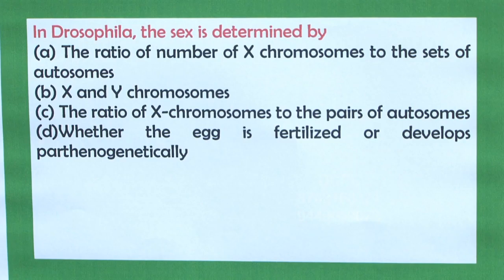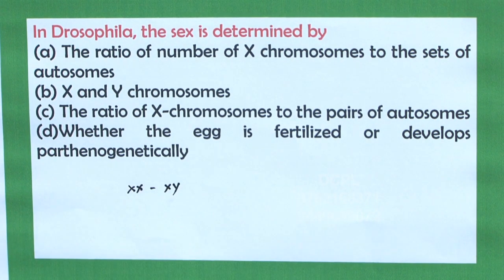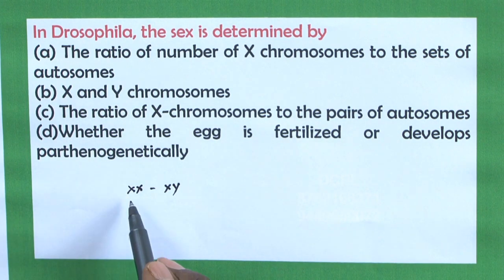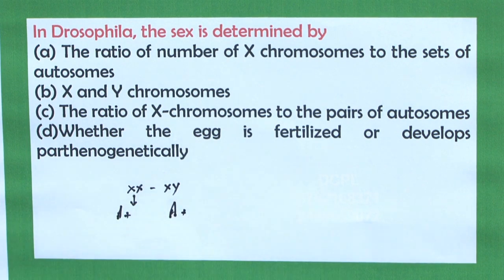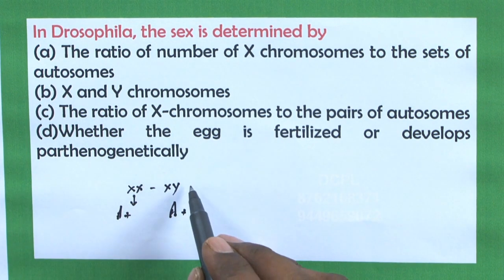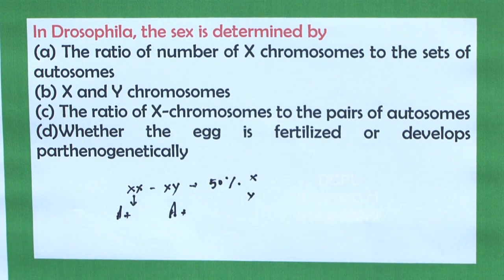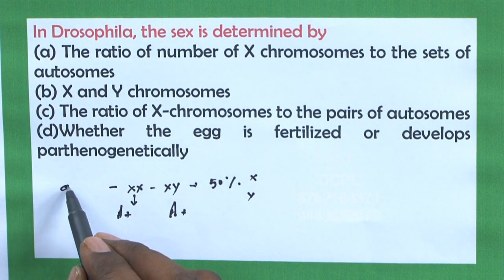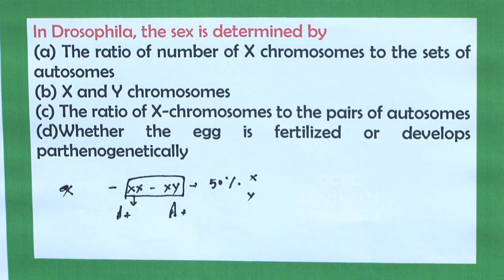Let us take a question: in Drosophila, the sex determination is by... In the case of Drosophila, the sex determination is called the XX-XY type. Females have autosomes and two X chromosomes, whereas males have autosomes and one X and one Y chromosome. The gametes produced by males are 50% carrying X and 50% carrying Y, whereas all female gametes carry autosomes and an X chromosome. So sex determination in Drosophila is very similar to humans — XX and XY.